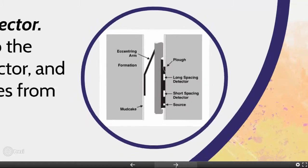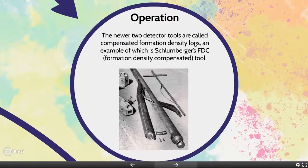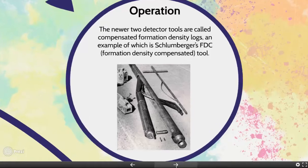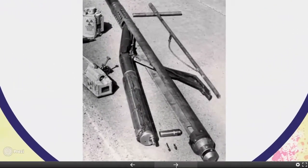A radiation emitter and one detector are all that is necessary for a simple measurement. The early tools had only one detector pressed against the borehole wall by a spring-loaded arm, but this was extremely inaccurate because it was unable to compensate for mud cake of varying thicknesses and densities. All newer tools have two detectors to compensate for the mud cake problem, and these are called Compensated Formation Density logs.